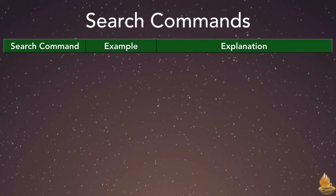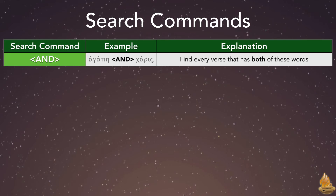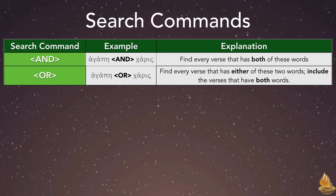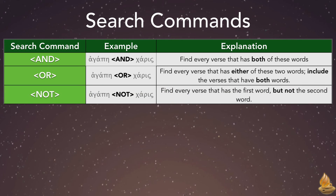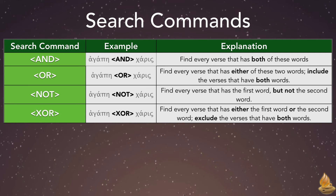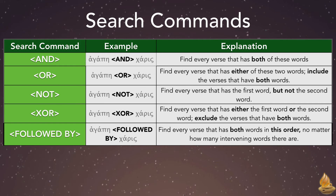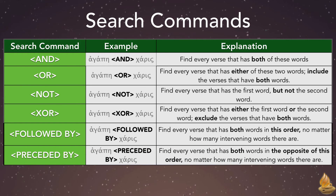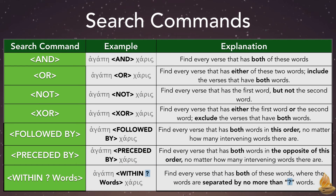We can also use Accordance's seven different connecting commands in our Greek searches, allowing for considerably more precision, whether searching for roots, lexemes, or inflected forms. The AND command finds every verse that has both words. The OR command finds every verse that has either one of the two words, including verses that have both. The NOT command finds every verse that has the first word but not the second. The XOR command finds every verse that has either the first or second word, but excludes verses that have both. FOLLOWED BY finds every verse with both words in this exact order, regardless of intervening words. PRECEDED BY does the opposite. Finally, WITHIN finds every verse with both words separated by no more than the number you specify.